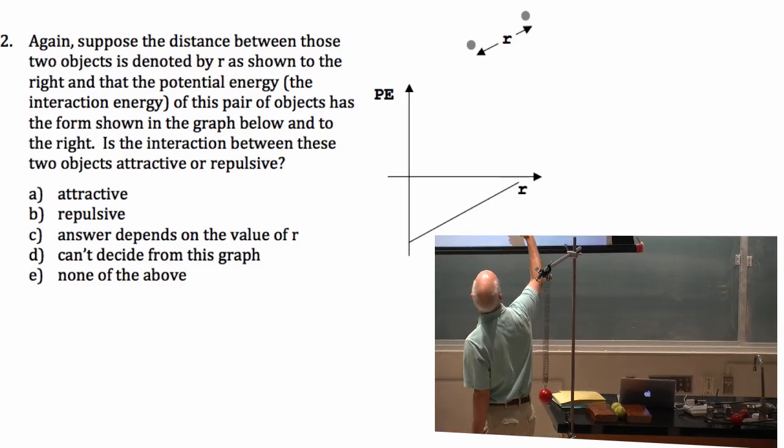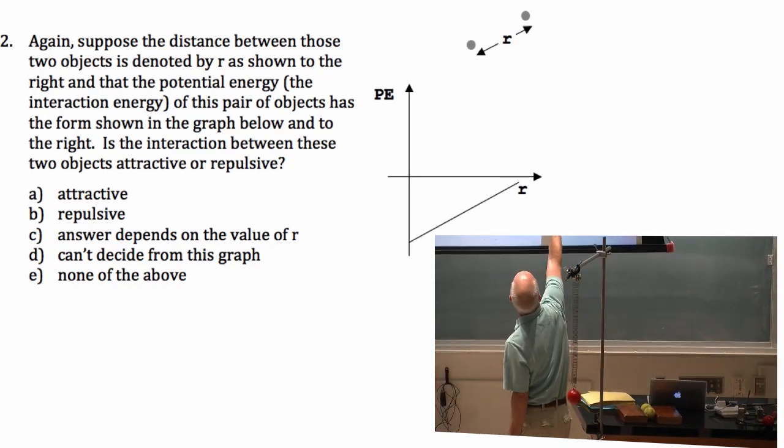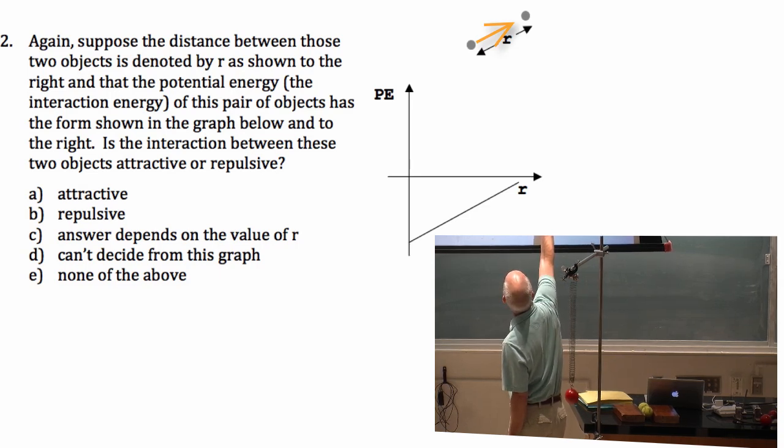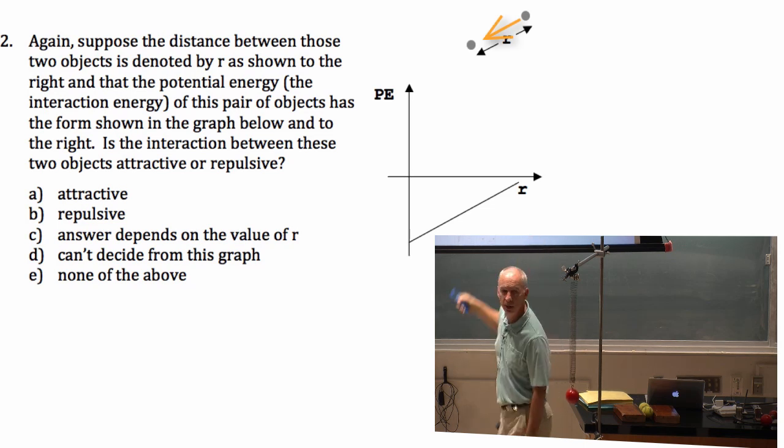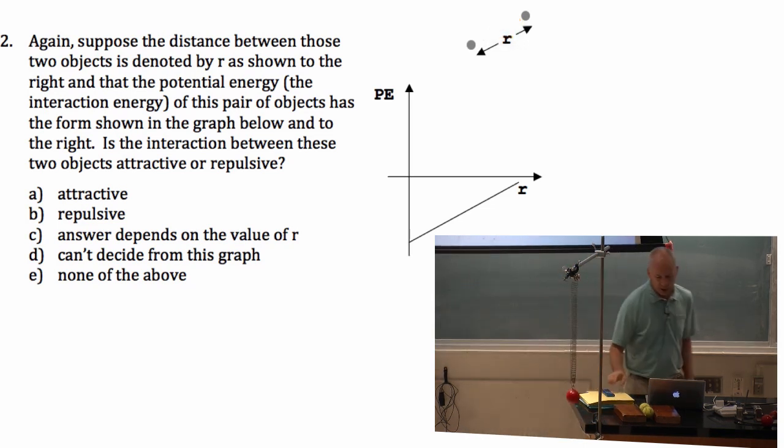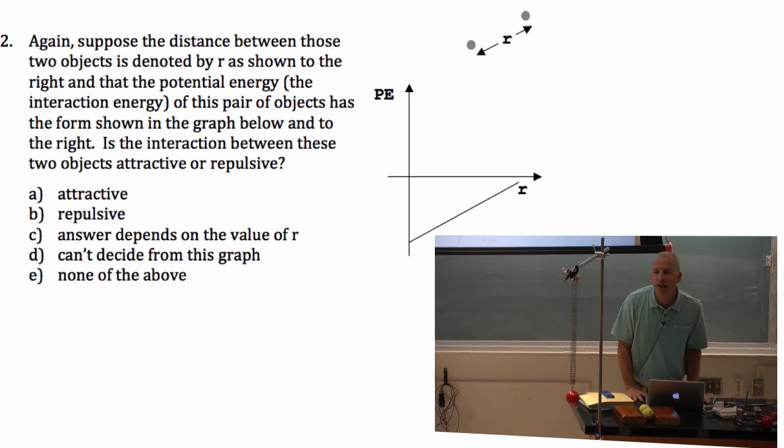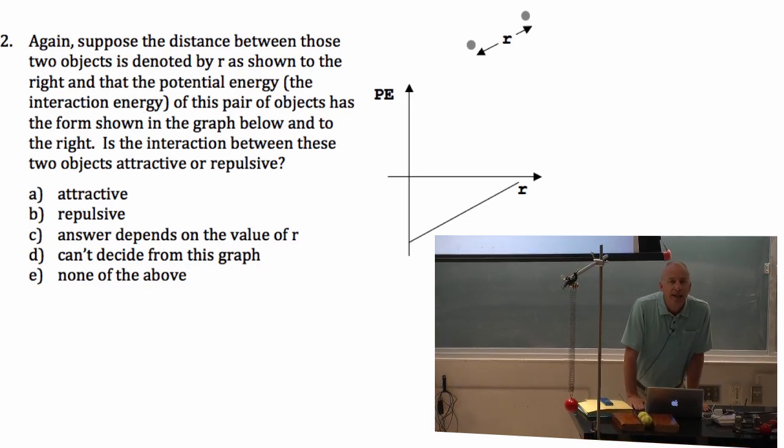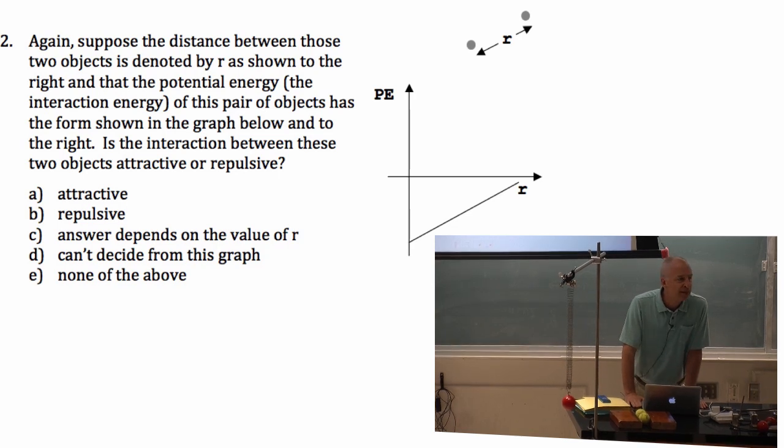The force on this one is directly toward that. It's being pulled toward the other one. The force on this one is directly toward that one. Another thing about interactions that you'll talk about a lot more in 7B is that both objects feel an interaction equally and oppositely.